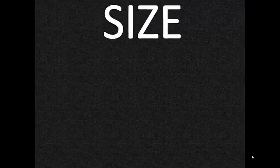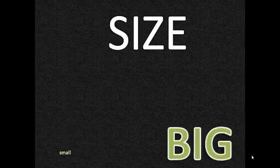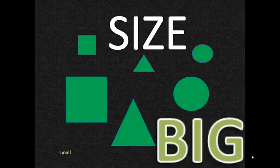Now let's sort by size. Small is tiny. Big is large. We have our shapes. Some are small and some are big.